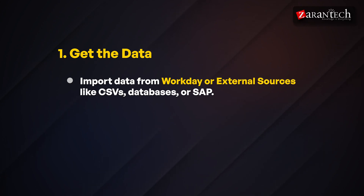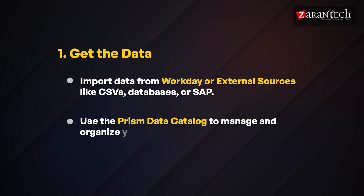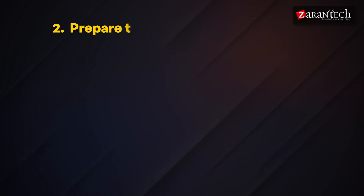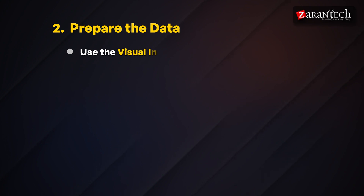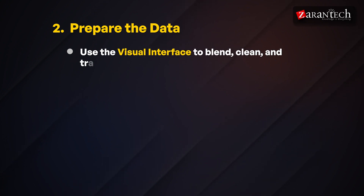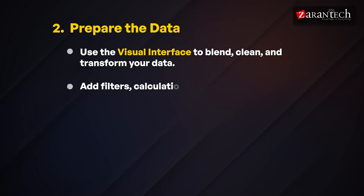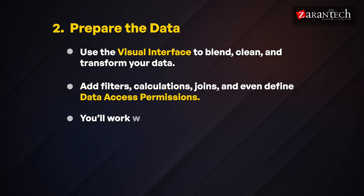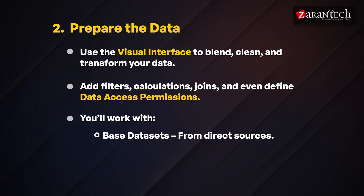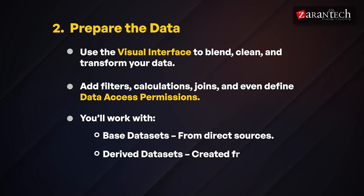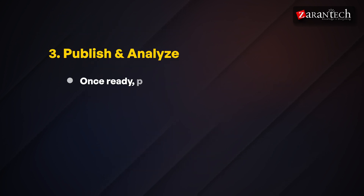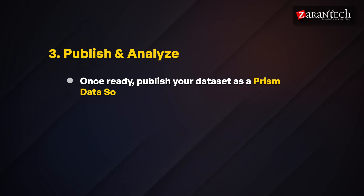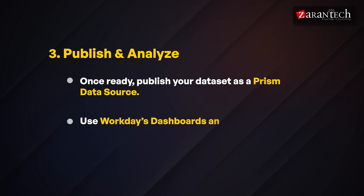How does it work, step by step? First, get the data: import data from Workday or external sources like CSVs, databases, or SAP. Use the Prism data catalog to manage and organize your data sets. Second, prepare the data: use the visual interface to blend, clean, and transform your data. Add filters, calculations, joins, and define data access permissions. You'll work with base data sets from direct sources, or derived data sets created from transformations and blends.